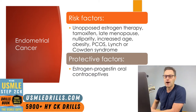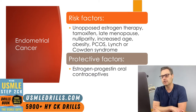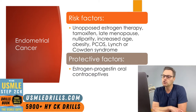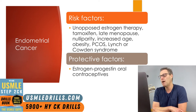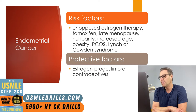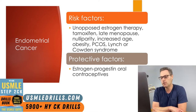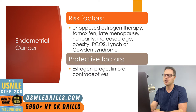As for protective factors, birth control with a progestin component results in decreased rates of endometrial cancer, and large epidemiological studies have shown that estrogen-progestin oral contraceptives cause a dramatic reduction in the risk of developing endometrial cancer.